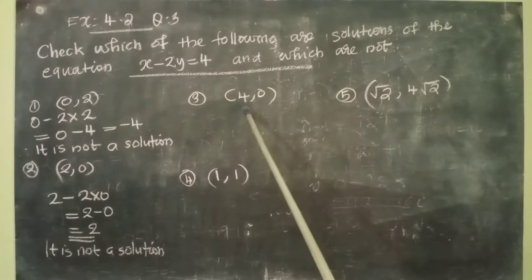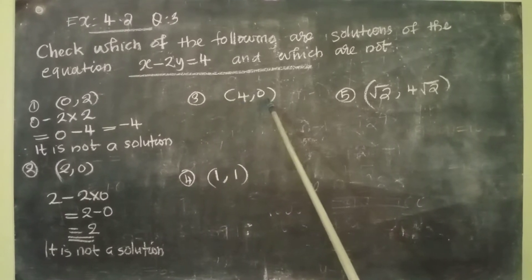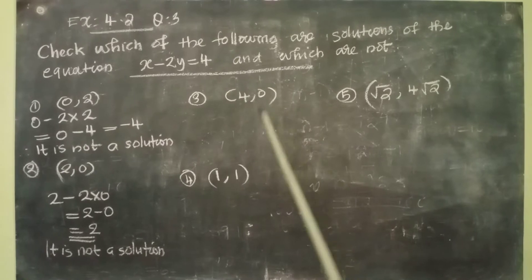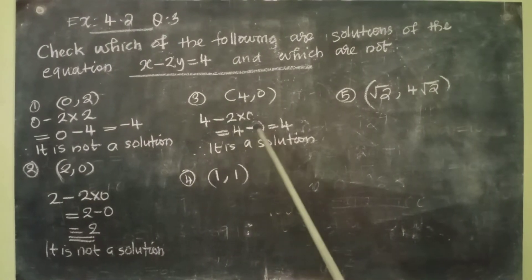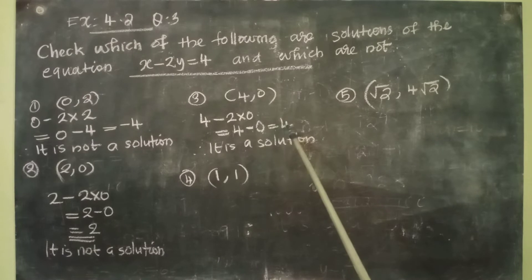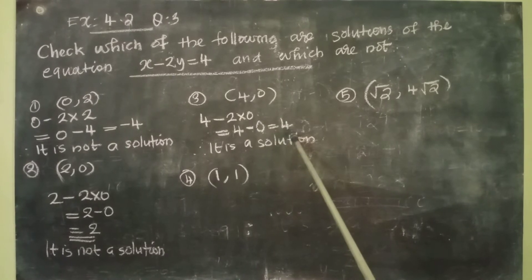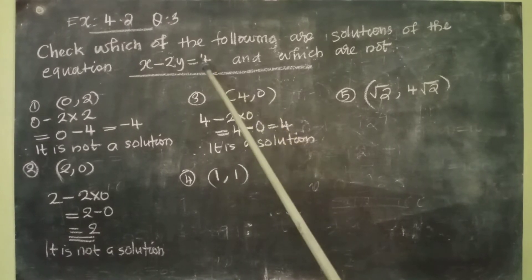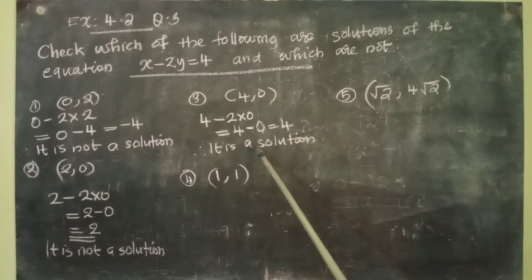The next pair is (4, 0). x is 4 and y is 0. Let us substitute there. We get 4 minus 2 into 0, that is equal to 4 minus 0, equal to 4. The answer here is 4 and the right-hand side is also 4, so we can conclude it is a solution.